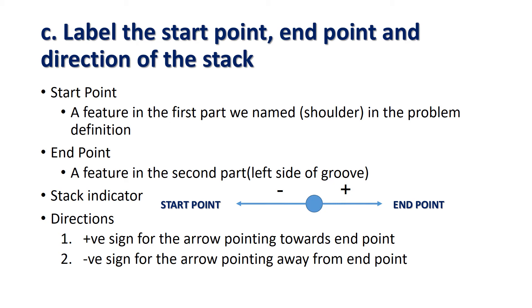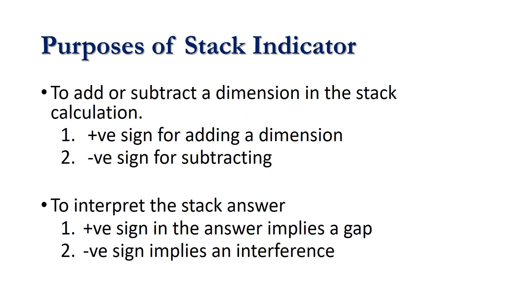Directions. Positive sign for the arrow pointing towards the end point. Negative sign for the arrow pointing away from the end point. Purpose of stack indicator: To add or subtract a dimension in the stack calculation. Positive sign for adding a dimension, negative sign for subtracting. To interpret the stack answer, positive sign in the answer implies a gap, negative sign implies an interference.